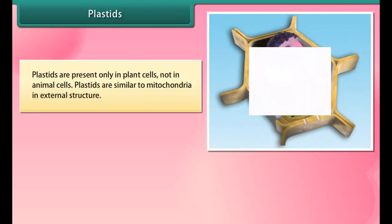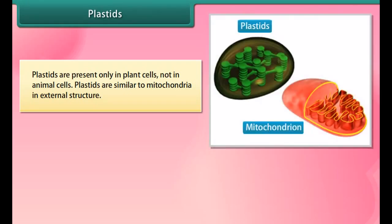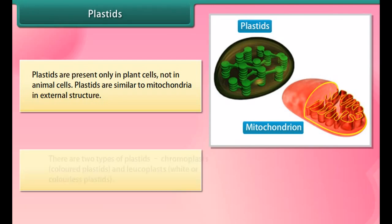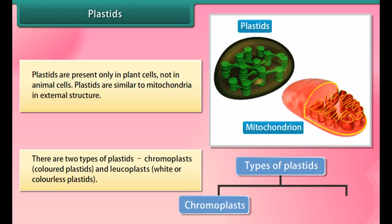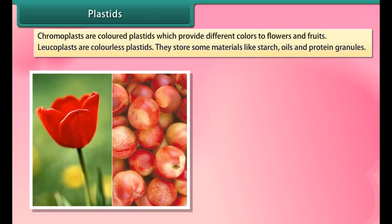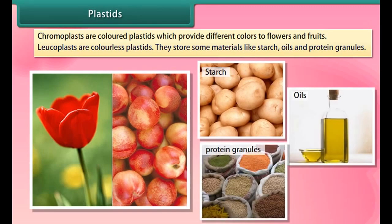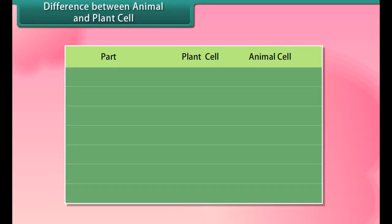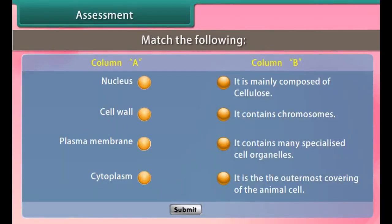Vacuoles are storage sacks for solid or liquid contents. In animal cells the size of vacuoles is small, while plant cells have very large vacuoles — the central vacuole of some plant cells may occupy 50 to 90 percent of the cell volume. In plant cells, vacuoles are full of cell sap and provide turgidity and rigidity to the cell. Many important substances are stored in vacuoles, including amino acids, sugars, various organic acids, and some proteins. In single-celled organisms like amoeba, the food vacuole contains food items that the amoeba has consumed. In some unicellular organisms, specialized vacuoles also play important roles in expelling excess water and wastes from the cell.